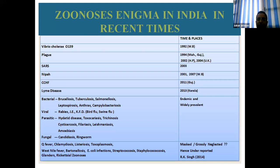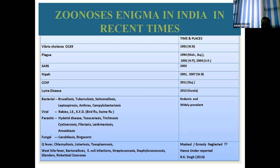In terms of zoonosis outbreaks in India: there was an outbreak of Vibrio cholerae in 1992 in West Bengal; plague in Maharashtra and Gujarat in 1994, and again in 2002 in Himachal Pradesh and 2004 in Uttarakhand; SARS in 2003; Nipah virus in 2001 and again in 2007 in West Bengal; Crimean-Congo hemorrhagic fever in 2011 in Gujarat; and Lyme disease in 2013 in Kerala. Endemic diseases include brucellosis, tuberculosis, salmonellosis, leptospirosis, anthrax, and campylobacteriosis.